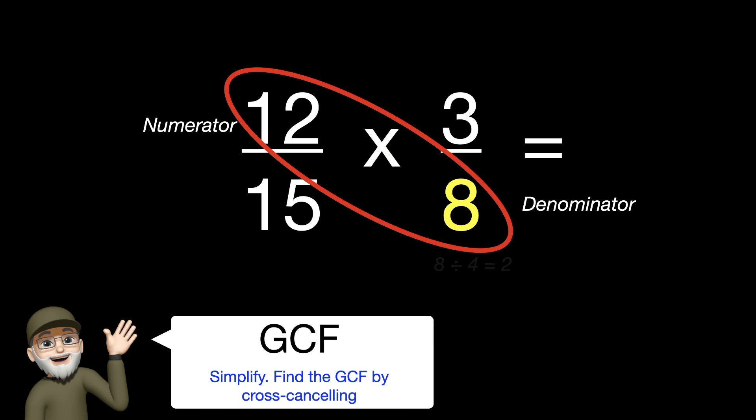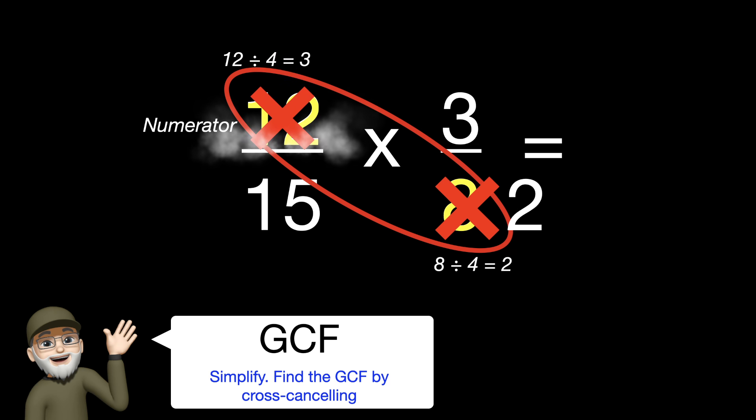For example, 8 divided by 4 would be 2. We cross out the 8 and rewrite the 2. At the top, the 12 would be 12 divided by 4 is equal to 3. We cross out the 12 and rewrite that as 3.